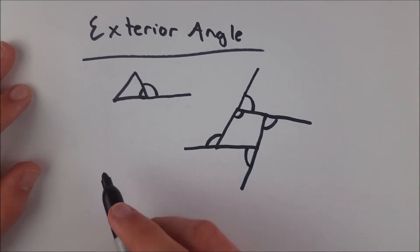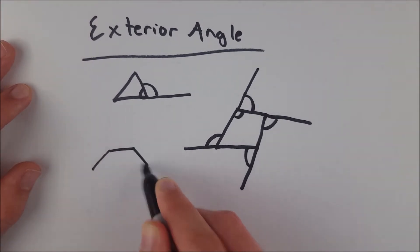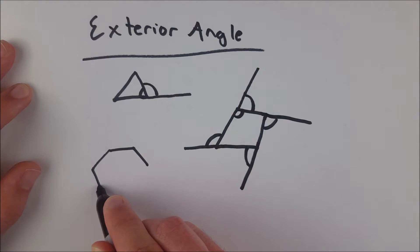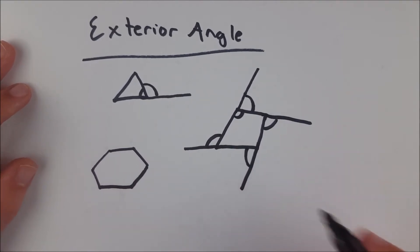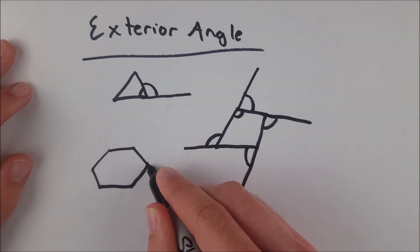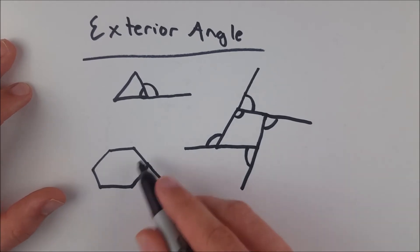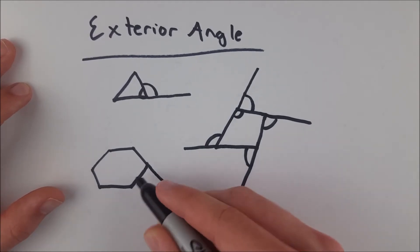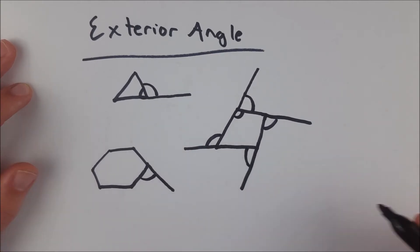And I'll just show you one more example for the sake of being thorough. Let's look at a hexagon. Kind of crappy hexagon, but oh well. No one ever said it had to be a regular polygon. So you can extend one side, and then the exterior angle is the angle formed between that side you extended and the adjacent side right there. There is the exterior angle.